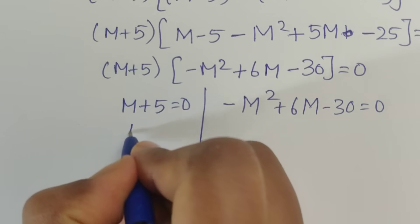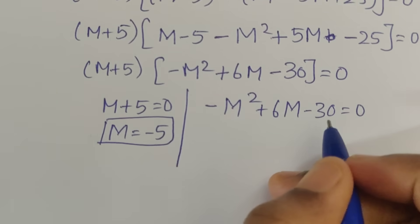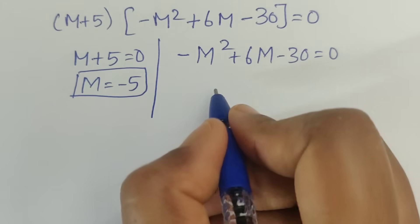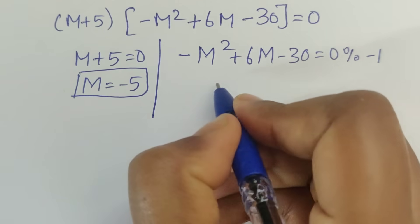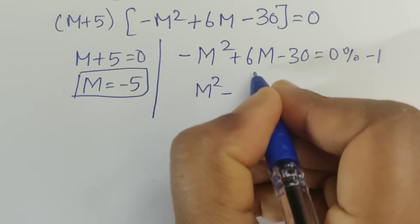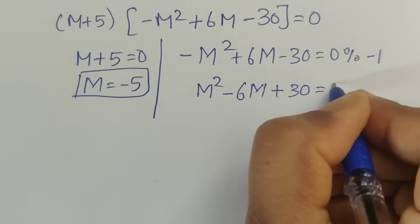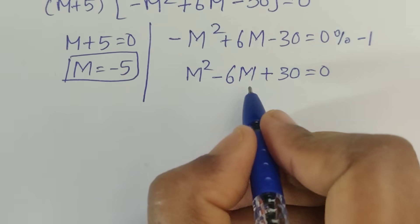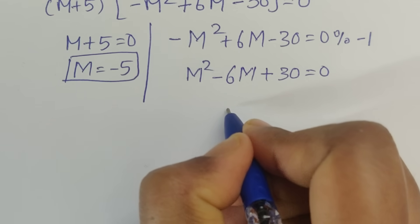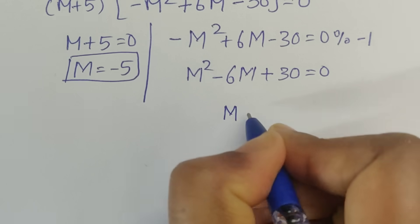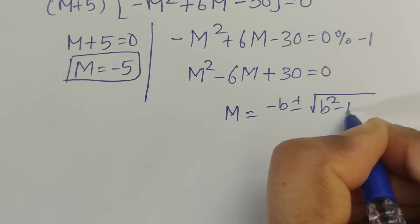Here we will get m equal to minus 5. So coming to the other side, multiply by divide by minus 1 on both sides. Then we will get m squared minus 6m plus 30 equals 0. So this is a quadratic formula. So here we can apply the quadratic formula: m equals minus b plus or minus square root of b squared minus 4ac, divided by 2a.